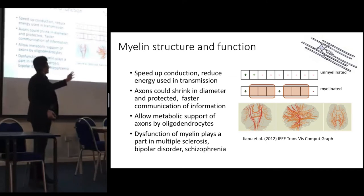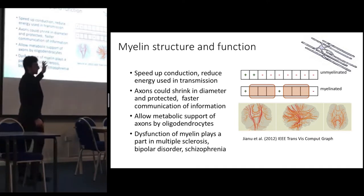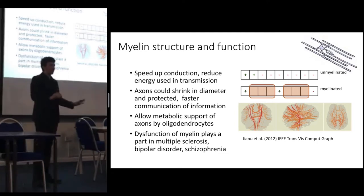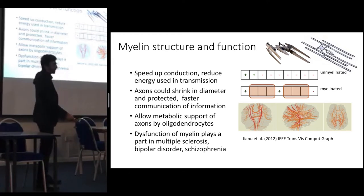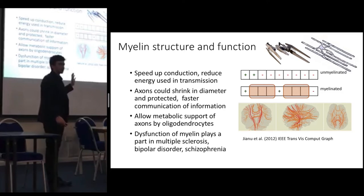Regarding saltatory conduction — myelin speeds up the conduction and reduces the energy used in transmission, as you are likely aware. By helping speed up the impulses, myelin has allowed axons to shrink in diameter and has protected the axons, allowing for faster communication of information between neurons around the brain, giving us higher abilities like thought. Myelin also plays a role in the metabolic support of the axon.